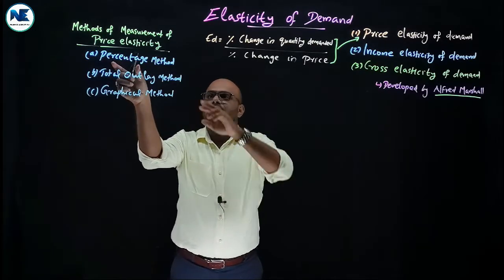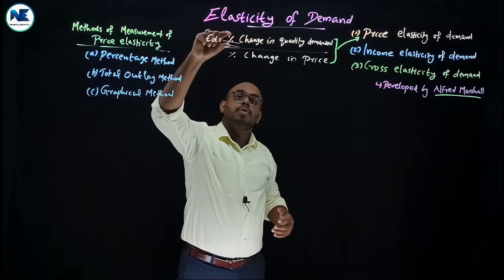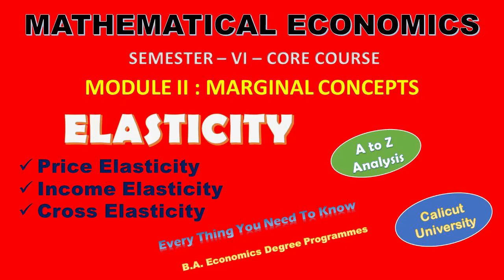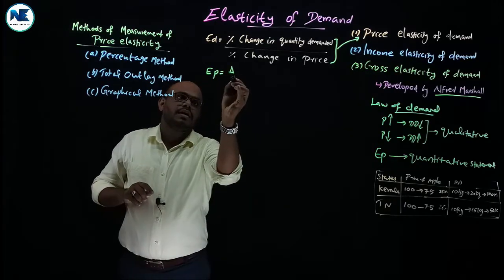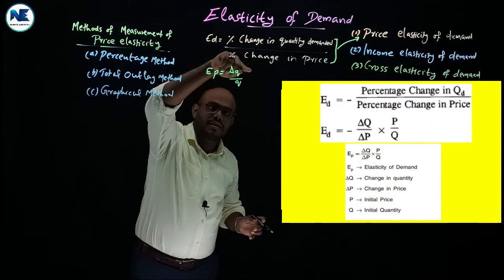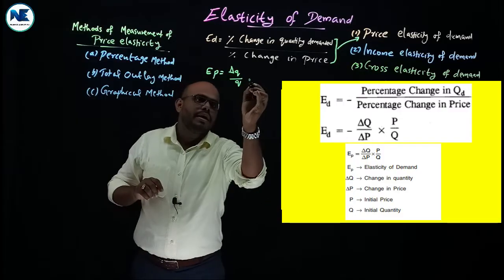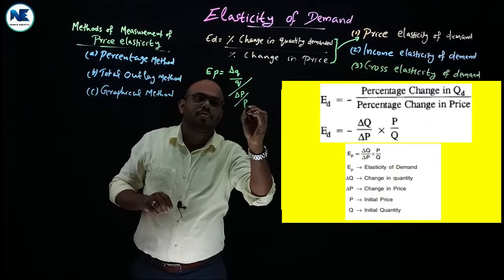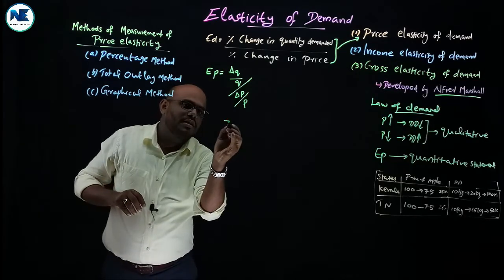Using the percentage method, the formula for price elasticity of demand is: percentage or proportionate change in quantity demanded divided by percentage or proportionate change in price. Expanding this: percentage change in quantity demanded equals change in Q divided by Q (where Q is the initial quantity demanded), multiplied by 100. Divided by percentage change in price, which is change in price divided by the original price.